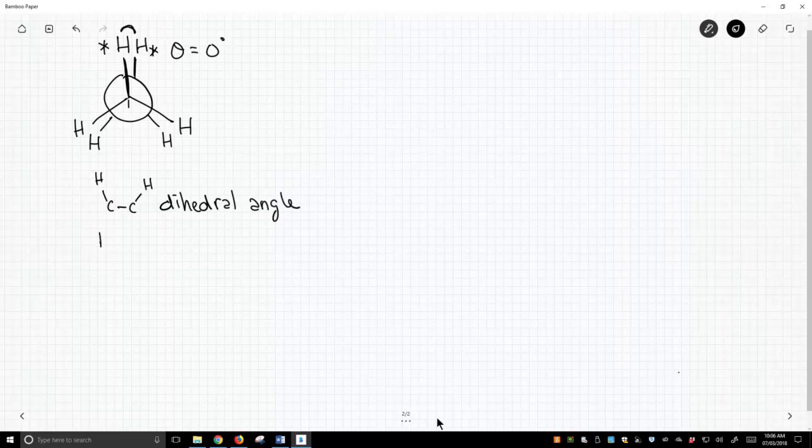This is different from angles that we defined before, which were simple bond angles. A simple bond angle just requires three atoms. We talked about these when we discussed hybridization, like bond angle of 109.5 degrees for a tetrahedral atom. But dihedral angles are a little bit different, so they require four atoms.